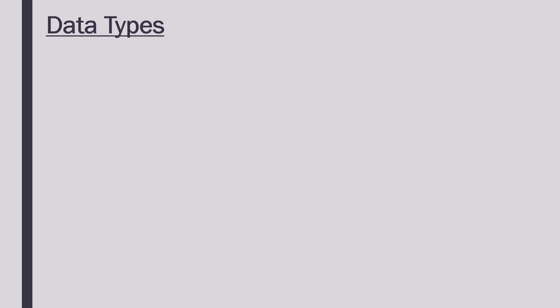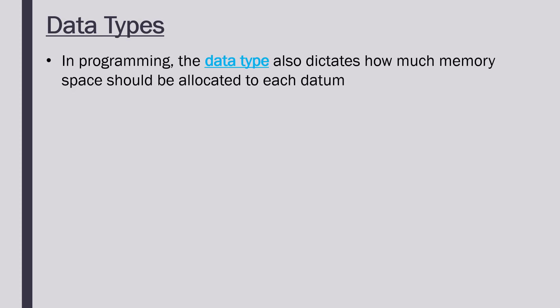Besides the operations that we can apply to the data, the data type will also dictate how much memory space is going to be allocated to each bit of data. A number might take up less space than a word. That makes sense; a number tends to be shorter than a word. This is relevant because if we're trying to cram loads of data onto a hard drive, we want to know how much space each individual example of the data will take up.